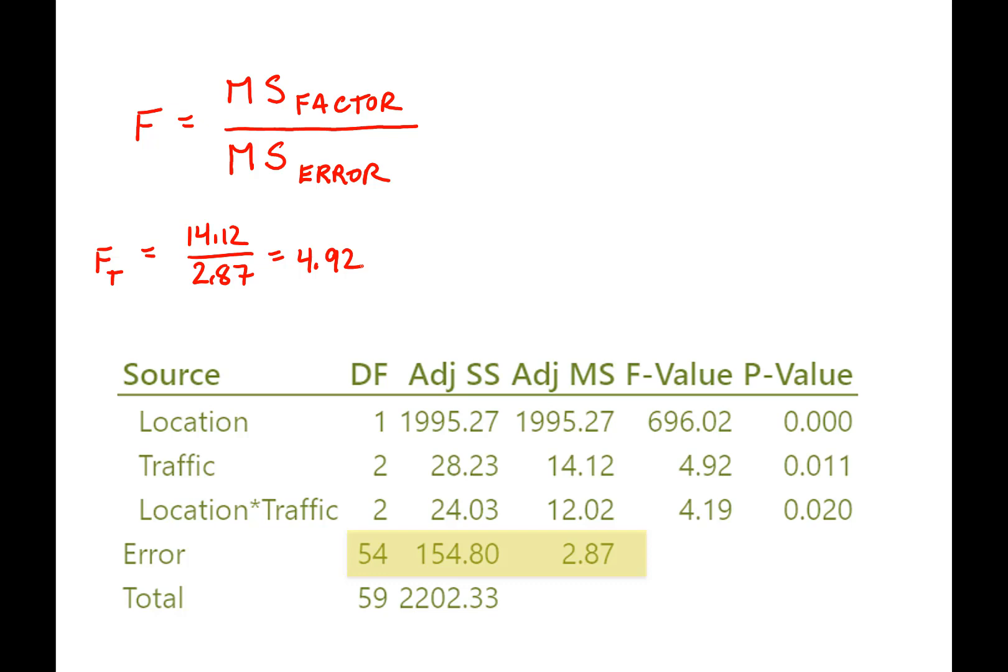Now, we actually use the same formula for location as an example. So the F value for our location is just going to be the mean square for our location, which is 1995.27 divided by the mean square for error, 2.87. And that equals 696.102.